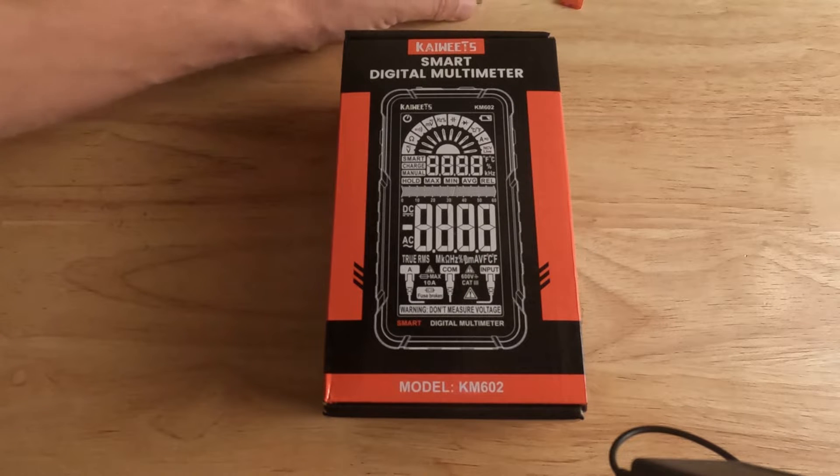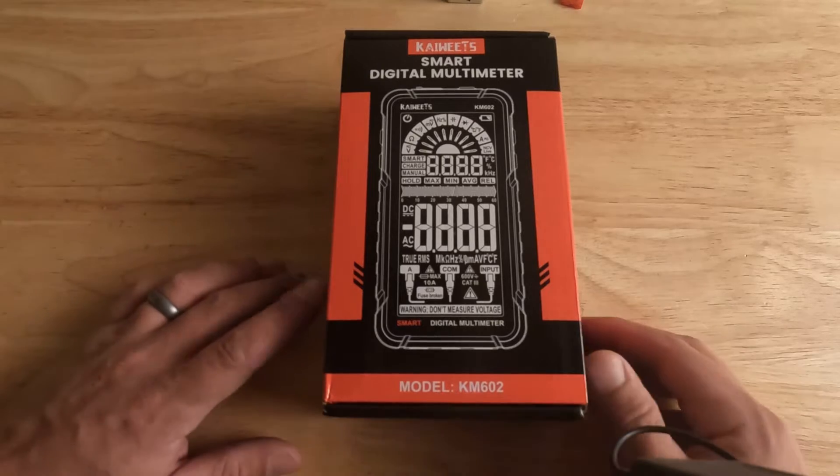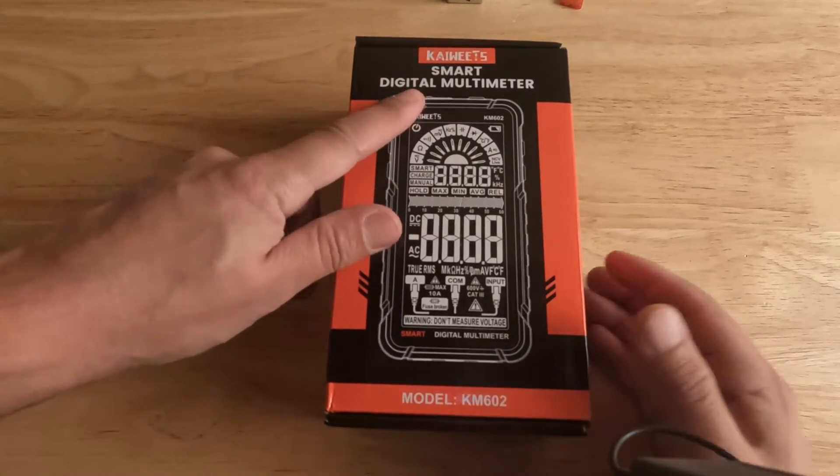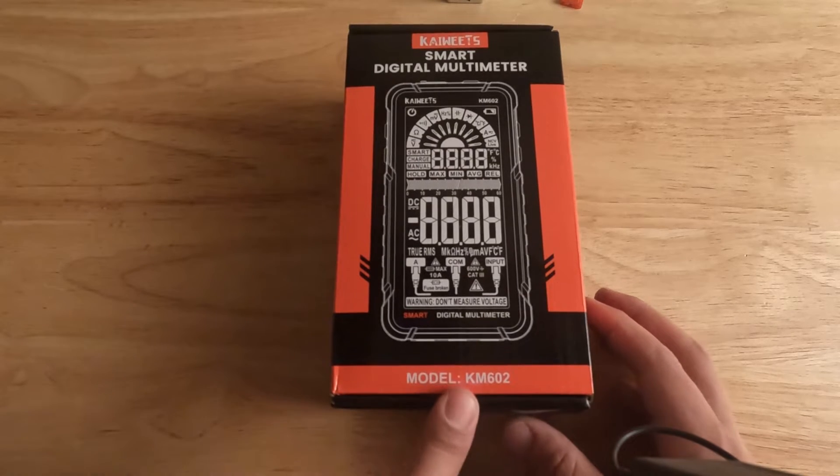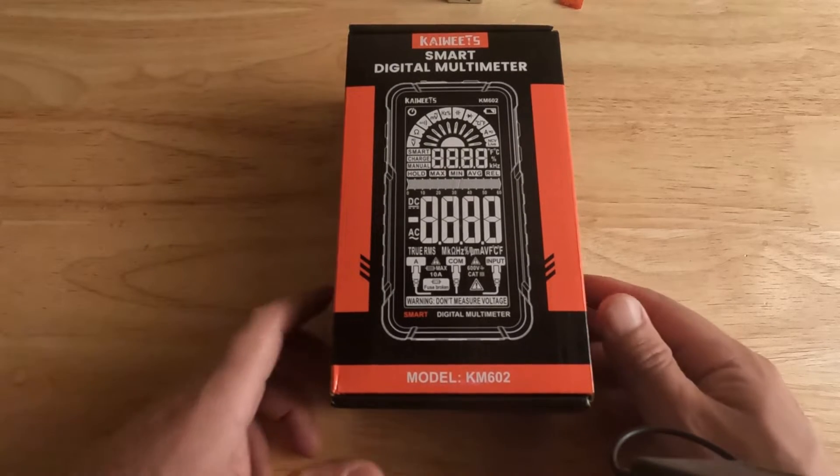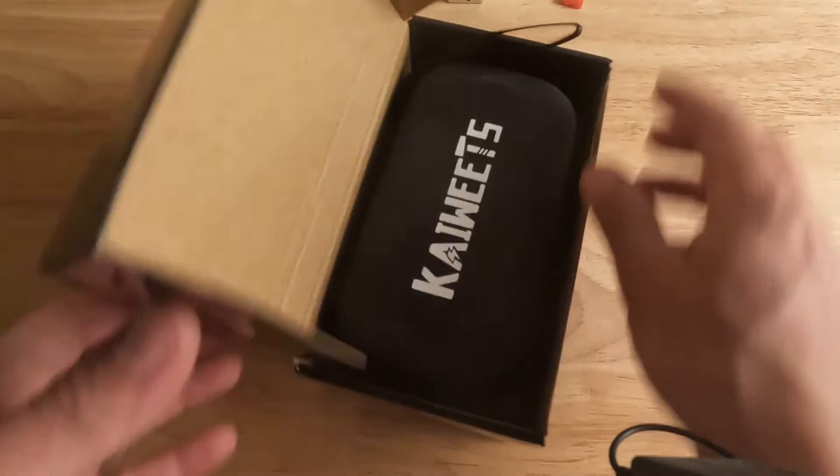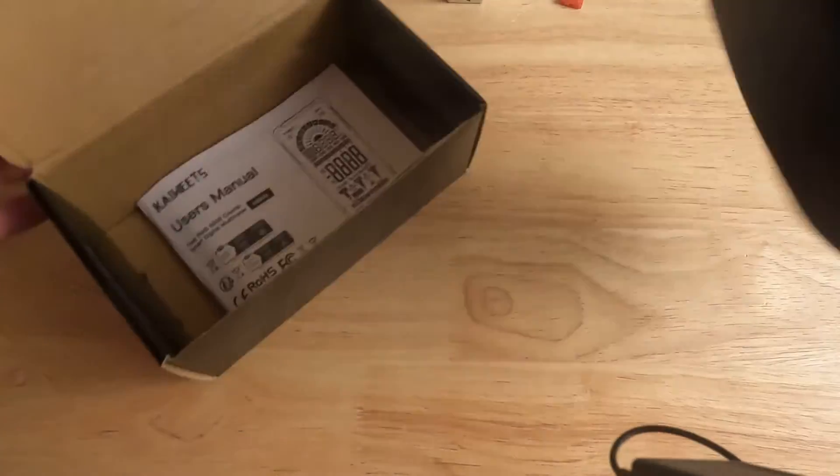Hey, what's up guys, Matt here with Fix Anything Save Money. Today we're going to be showing you how to use a multimeter. This is the Kaiweets Smart Digital Multimeter, model KM602. We're going to be going over the features of this multimeter and then showing you the basic functions.